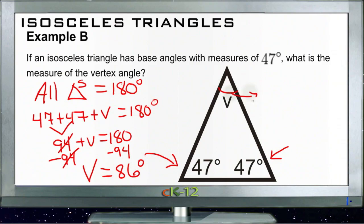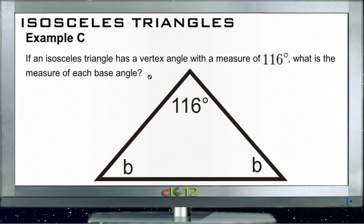All right, and finally, example C. Example C says if an isosceles triangle has a vertex angle with a measure of 116 degrees, what's the measure of each base angle? Now again, specifically because this is an isosceles triangle, we know that these two sides are the same and that these two angles down here are the same.